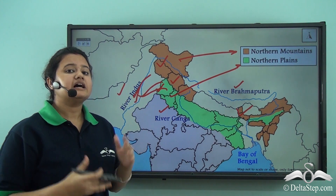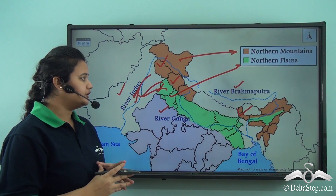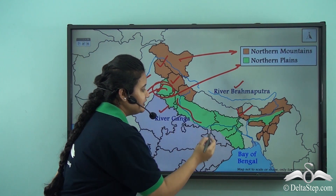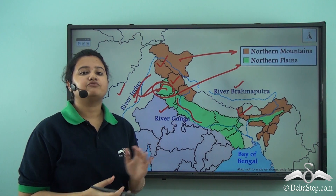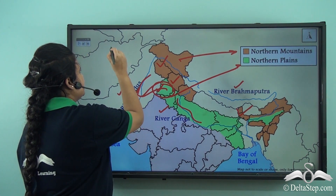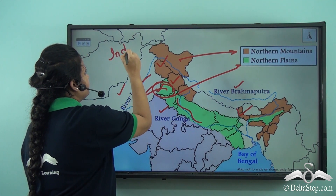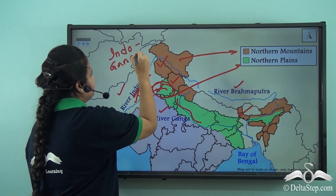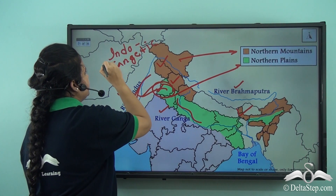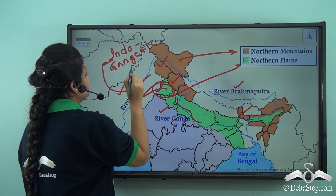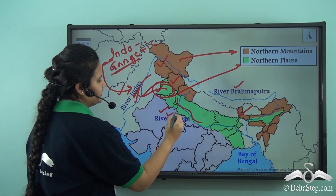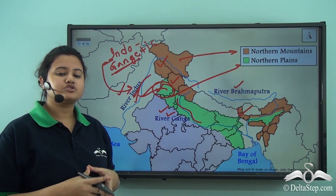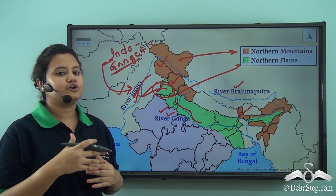A major portion of the Northern Plains is drained by the tributaries of Indus and by the Ganga River itself. Therefore, another name for the Northern Plains is the Indo-Gangetic Plain, where 'Indo' stands for River Indus and 'Gangetic' stands for River Ganga. Apart from the Indo-Gangetic Plain, the Northern Plains are also known as the Great Plains of India.